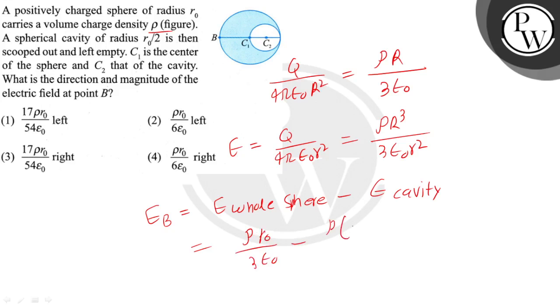Minus ρ(r₀/2)³/(3ε₀(3r₀/2)²). Solving this, the value comes out to be 17ρr₀/(54ε₀). That is the value of Eb.